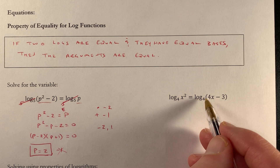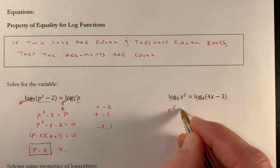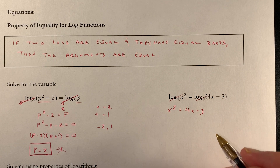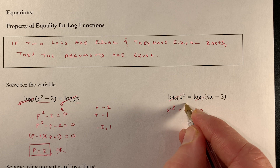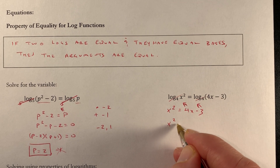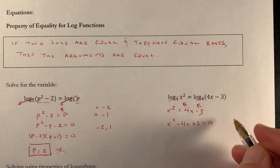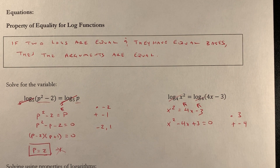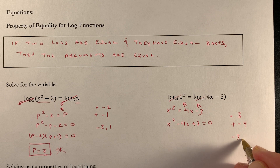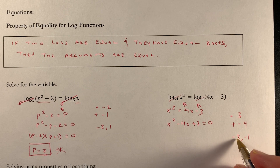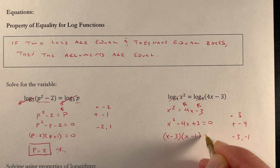Next example: once again I have equal logs with equal bases, so the arguments are equal: x squared equals 4x minus 3. I want to move everything to one side where the x squared term is positive, giving x squared minus 4x plus 3 equals 0. I need two numbers that multiply to positive 3 and add to negative 4 — those are negative 3 and negative 1. Negative 3 times negative 1 is positive 3, and negative 3 plus negative 1 is negative 4. So the factored form is (x minus 3)(x minus 1) equals 0.